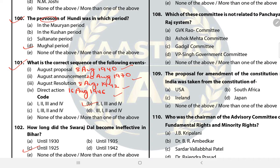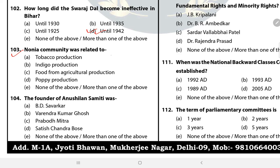Question 103: The Nonia community was related to? The answer is none of the above — it is related to the production of saltpetre (Shora). Question 104: The founder of Anushilan Samiti was? The answer is more than one of the above — the founders were Virendra Kumar Ghosh, Pramod Mitra, Satish Chandra Bose, etc.